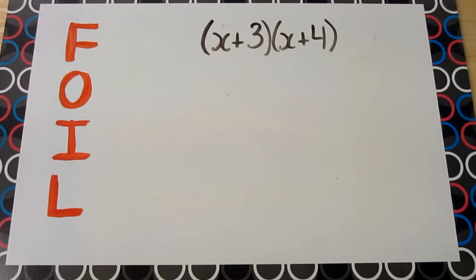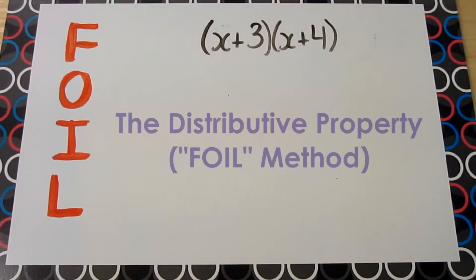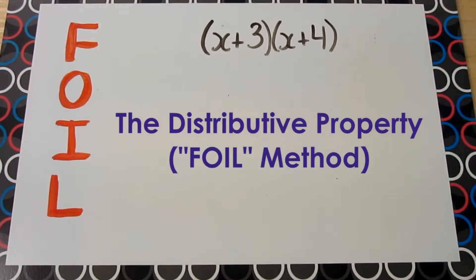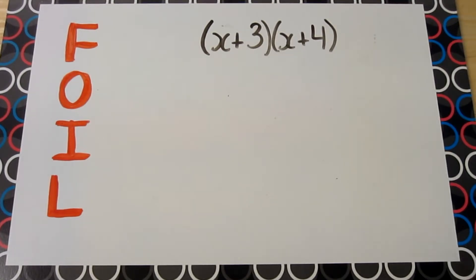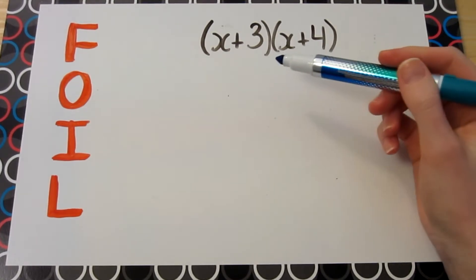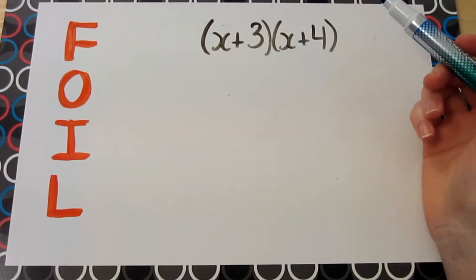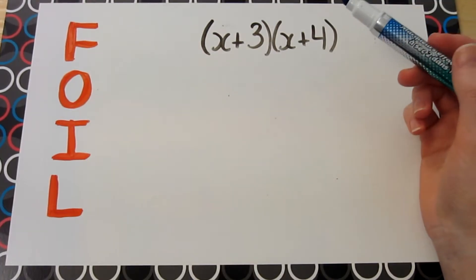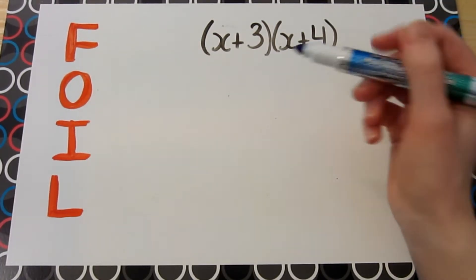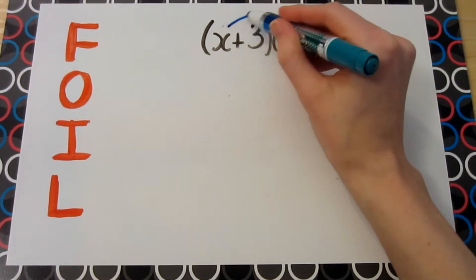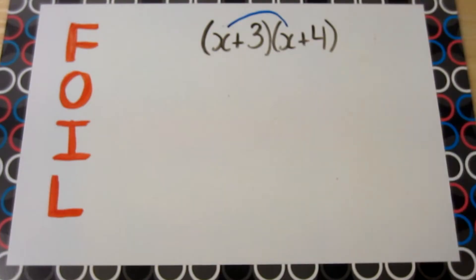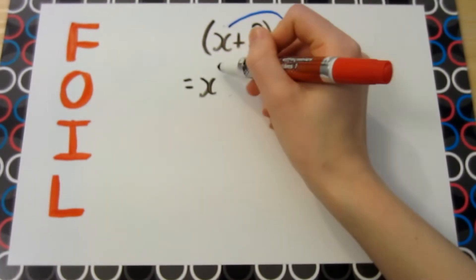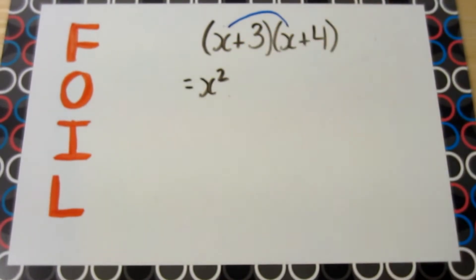In order to understand how to factor trinomials, first let's review the distributive property, which is what you use when you multiply binomials. Here we have an example: x plus 3 multiplied by x plus 4. Using the FOIL method, we start by multiplying the first terms, so x times x equals x squared.